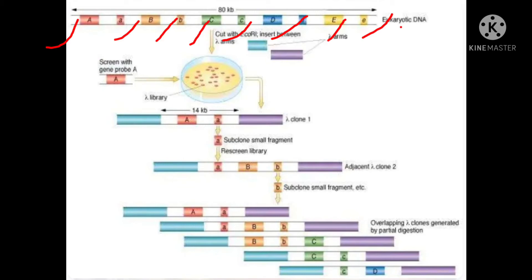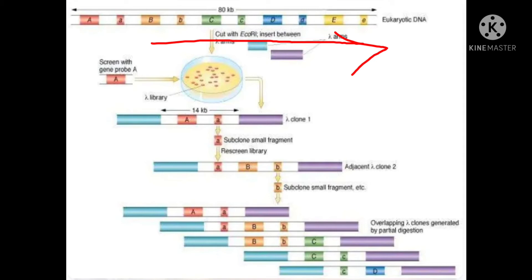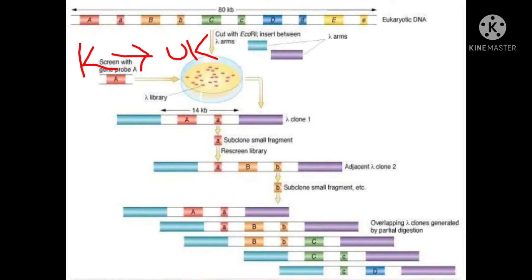We have genes: capital A, small a, capital B, small b, capital C, small c, capital D, small d, capital E and small a. The colored portions are the exons which code for a particular protein. We have separated the capital A gene from the rest, and we are going to use this gene as a marker for the identification of the rest. Gene A sequence is known, so from this known region we move towards the unknown region. In chromosomal walking we literally walk along the chromosome from the known region to the unknown region, and we continue the process until we find a particular gene.